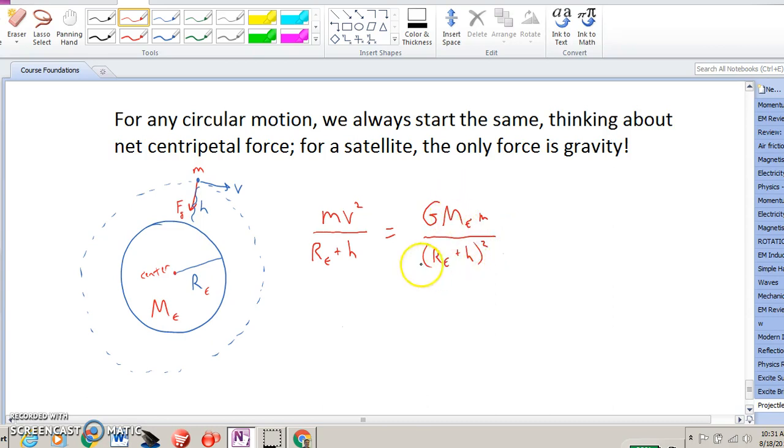We can simplify this a little bit, and if we solve for that speed, for the V, notice that the mass of the satellite actually drops out. It's on both sides. That distance is in our denominator on both sides, so one of those drops out. What we're left with is our gravitational constant, the mass of the Earth, and the distance between the two, the two centers at least, the radius of the Earth plus the height above the surface, and then we have to square root that. This is known as orbital speed, or the orbital velocity.